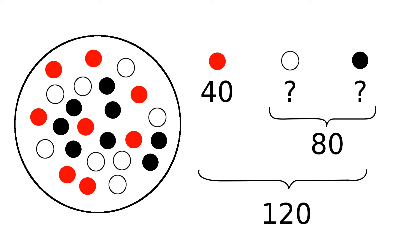Here's a simple example. Suppose I have a large lottery barrel full of coloured balls. There are 120 balls in total, and exactly 40 of them are painted red. The rest of the balls are either white or black, but I don't know the proportion of each colour. There could be 80 white balls and no black ones, no white balls and 80 black ones, or anything in between. So exactly a third of the balls are red, and the rest are some mixture of white and black balls.